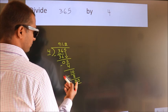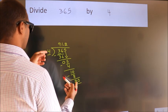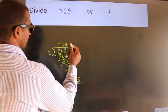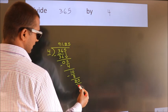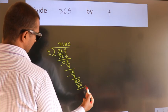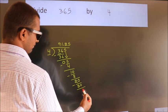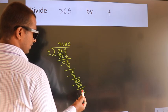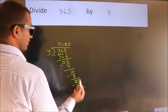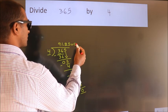So 20. When do we get 20 in the 4 table? 4 times 5 is 20. Now we subtract, we get 0. We got remainder 0, so this is our quotient.